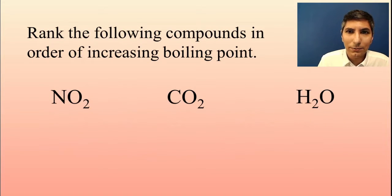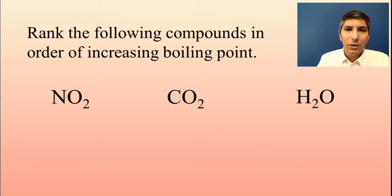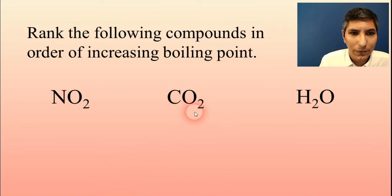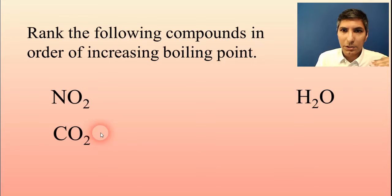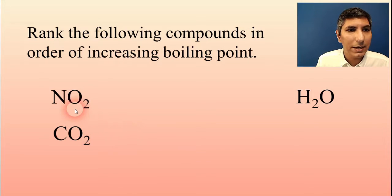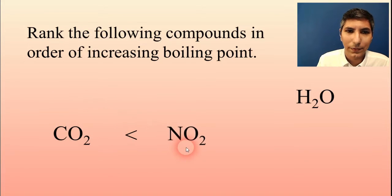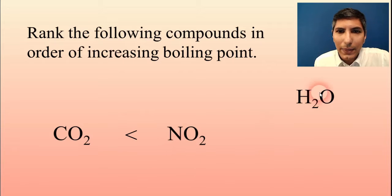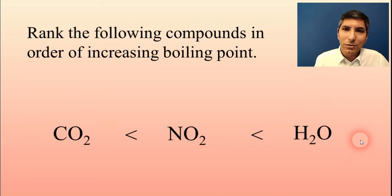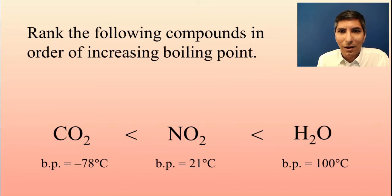Now let's use what we've learned to rank these compounds in order of increasing boiling point. London dispersion forces alone will be the weakest, giving the lowest boiling point. The nonpolar one is carbon dioxide — nonpolar means the lowest. Next is dipole-dipole: the normal run-of-the-mill dipole-dipole molecule would be nitrogen dioxide, a polar molecule, so that's in the middle. And hydrogen bonding is the highest — that would be water, because water has hydrogen bonding. Looking up the boiling points confirms our predictions are absolutely correct.